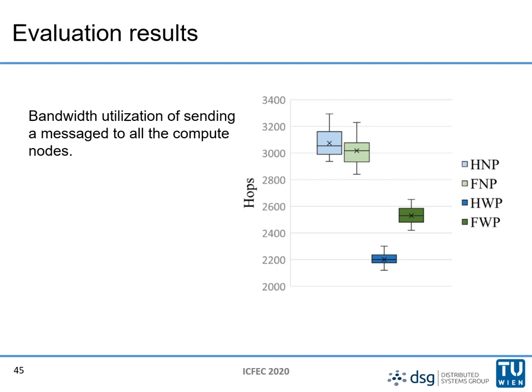In the third experiment I measured bandwidth utilization as the sum of hops needed to send a message to all nodes in the system. I consider this a bandwidth measurement because every hop traveled consumes part of the available bandwidth. The algorithms that consider proximity tend to have lower bandwidth utilization, because they manage to place nodes that reside close to each other in the same group, so less bandwidth is consumed when communicating. We also see that the hierarchical architecture needs less bandwidth than the flat one, because it is more efficient in placing nearby nodes in the same group.